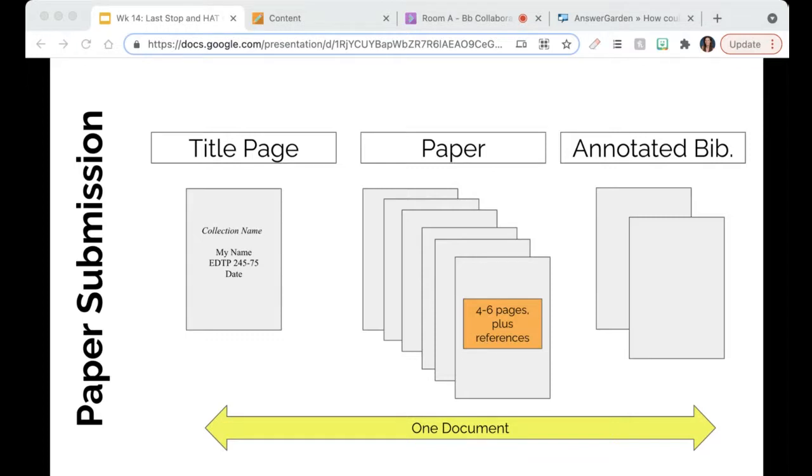So on that title page, it doesn't have to be anything fancy. Just the name of your collection, your name, our course number, and the date, right? And the reason being, not that that's super important, but for a lot of us, this just to kind of get used to college writing. This is a staple of APA writing in the college setting. So I want us to get used to that.